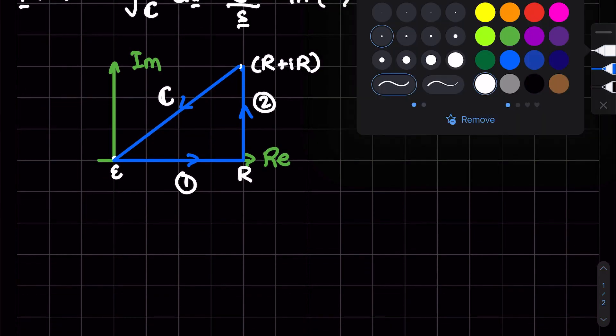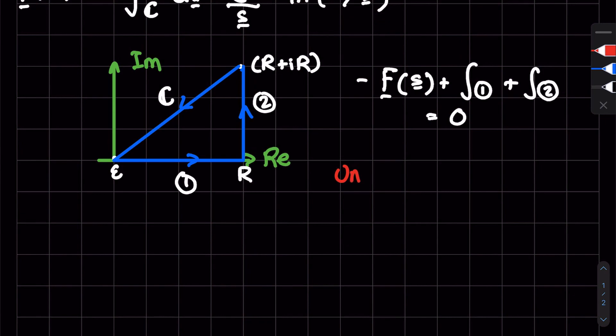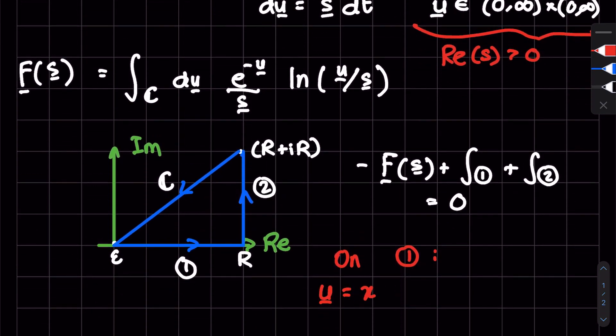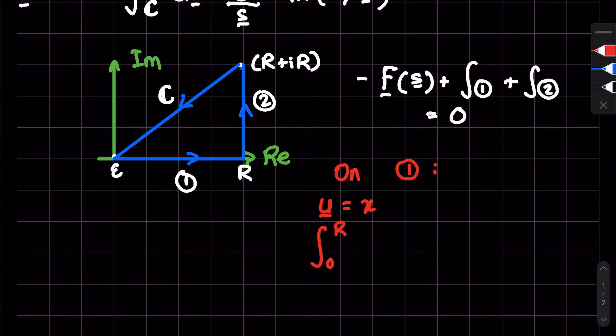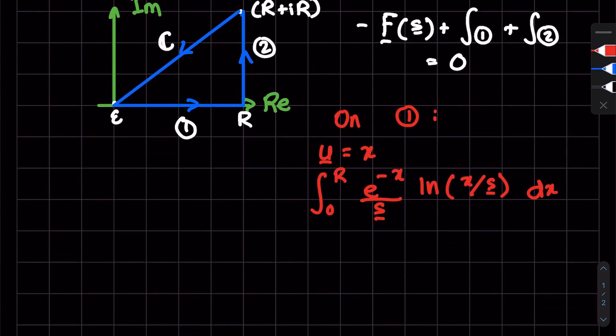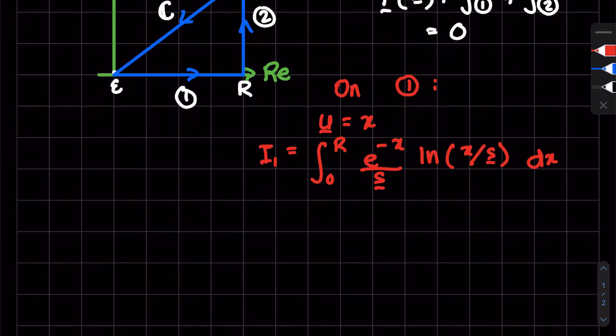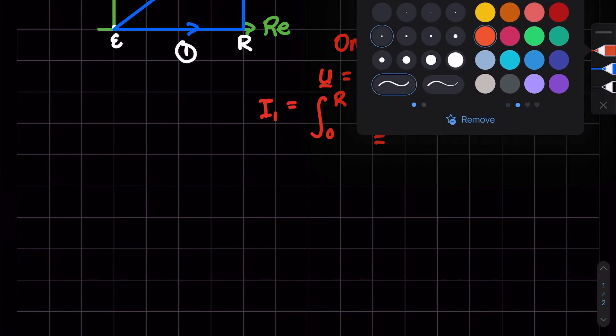So on segment one, u is just some real value, so call it x. We have integral from zero to R of e to the minus x over complex s, natural log of x over complex s, dx. And this is real, so we can really work with this; it's really nice. Let's just keep it as it is, call it I1.